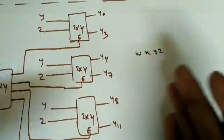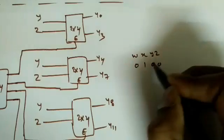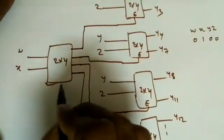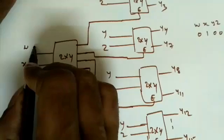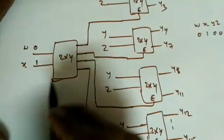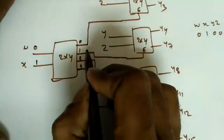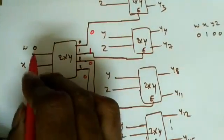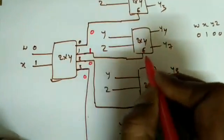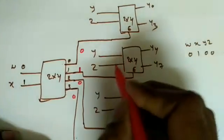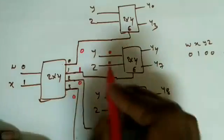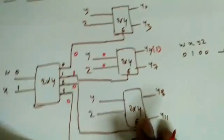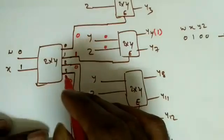Verification: suppose wxyz = 0100, which is decimal 4, so y4 should be 1. With enable active, wx=01 means output 1 of the controlling decoder is high, enabling the second 2x4 decoder (handling y4–y7). yz=00 means that decoder outputs y4=1, remaining all zero. We get y4=1 as expected. Total 2x4 decoders required for 4x16: four plus one = five.